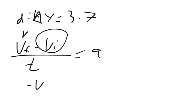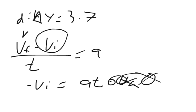So it's negative initial velocity equals at minus final velocity. It equals acceleration times time minus final velocity. Since our final velocity is zero, we can just cross it all out. So negative initial velocity equals at, or I could say initial velocity equals negative at.